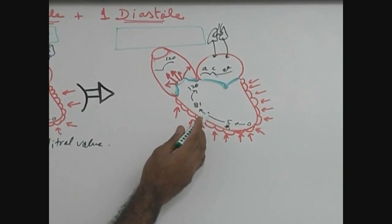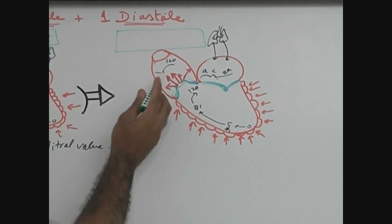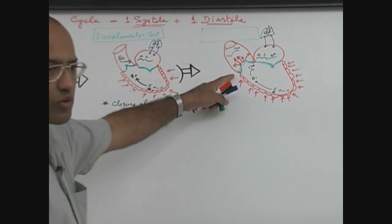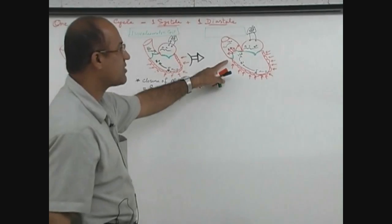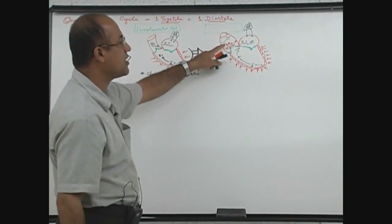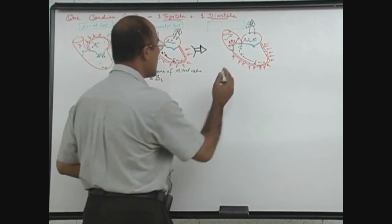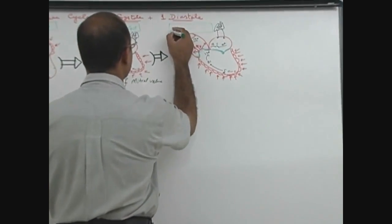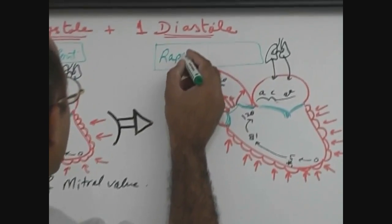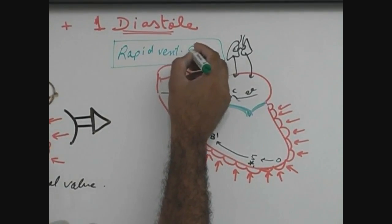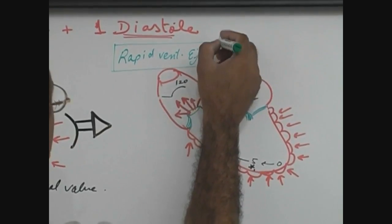Pressures in the ventricle are faithfully transmitted to aorta as aortic valve is fully open. Or we can say ventricle and aorta are behaving as the same chamber. This phase is called rapid ventricular ejection phase.